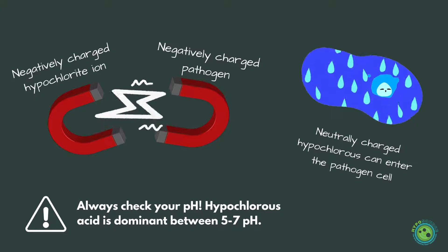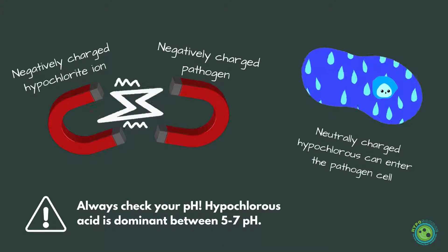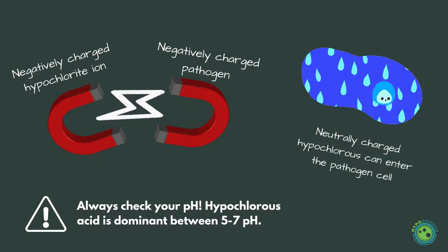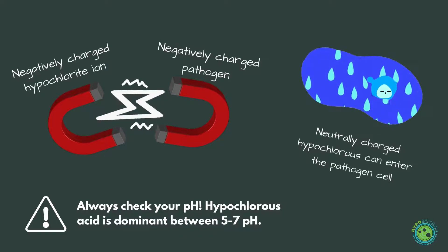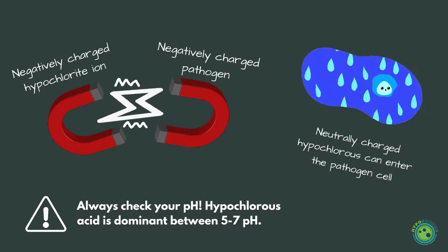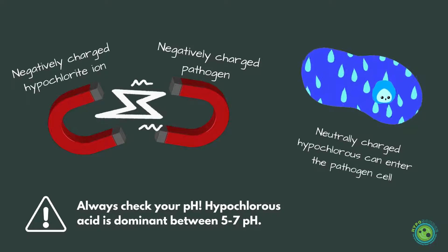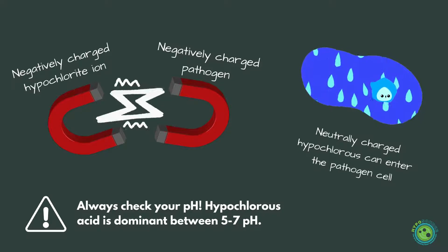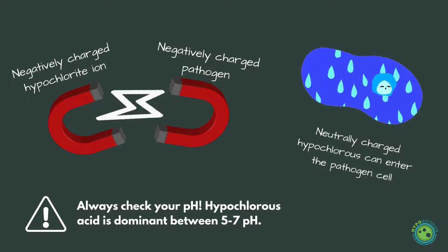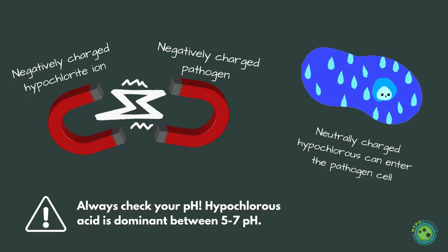Let's back it up a step — what is pH? pH is the measure of the positively charged hydrogen ions. Low pH means more positive ions; high pH means a more negatively charged solution. Pathogens tend to be negatively charged. Unfortunately, so is hypochlorite — you might know this chemical by its street name, bleach. Because they are both negatively charged, pathogens and bleach tend to repel each other, kind of like two magnets.